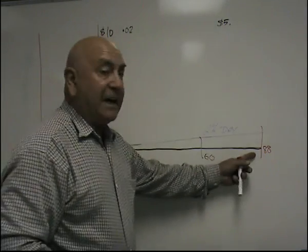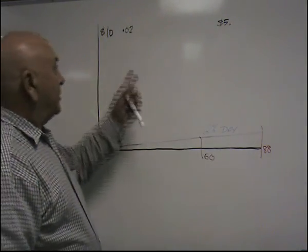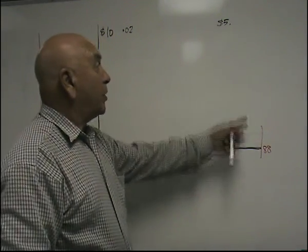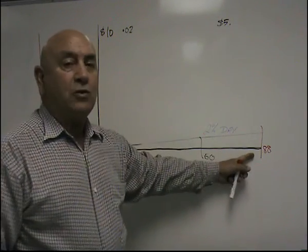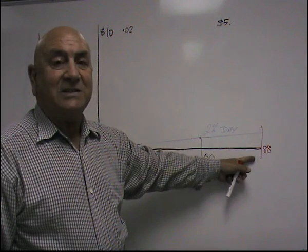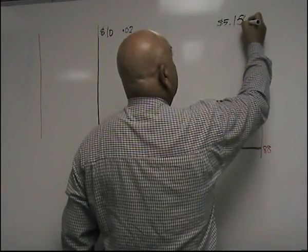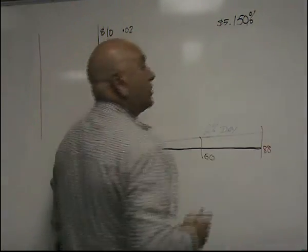So at the end of 88 days, you've got your money back after 50 and you made a profit of $5 after the remaining 38 days. That's 150% return on the money.